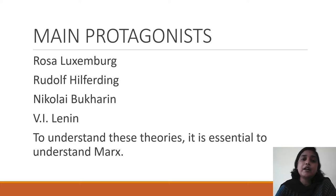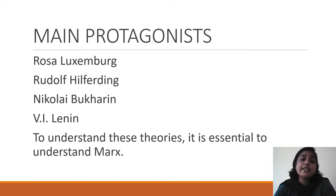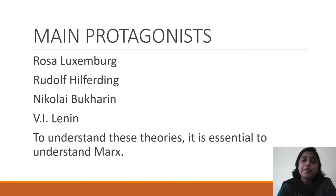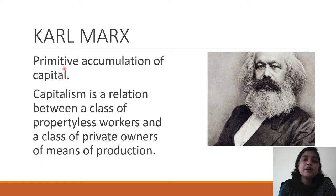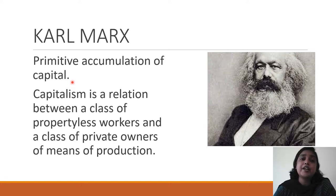Before we discuss the main protagonists and their theories, since we are discussing the Marxist theories, it is essential to understand Marx — what Marx has said about capitalism and imperialism. It is on the basis of what Karl Marx said that these protagonists developed their own theories. Marx talks about the primitive accumulation of capital, which is the main highlighting point of his theory.